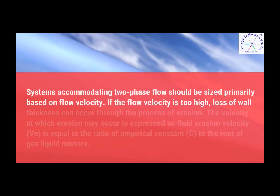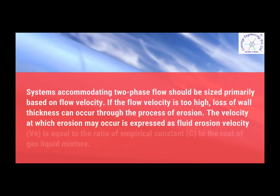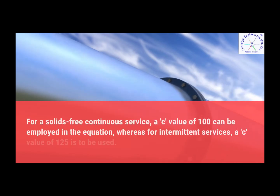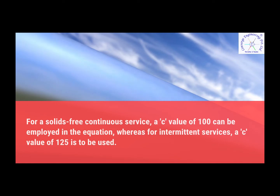What is meant by erosion velocity? Systems accommodating two-phase flow should be sized primarily based on flow velocity. If the flow velocity is too high, loss of wall thickness can occur through the process of erosion. The velocity at which erosion may occur is expressed as fluid erosion velocity, equal to the ratio of an empirical constant to the root of gas-liquid mixture density. For solids-free continuous service, an AC value of 100 can be employed in the equation, whereas for intermittent services, an AC value of 125 is to be used.